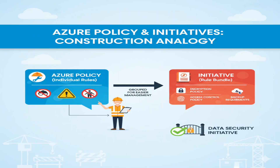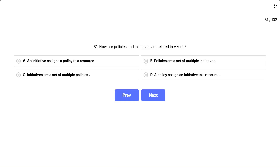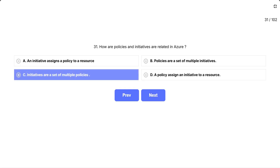Here's a helpful analogy. Think of Azure policy like individual safety rules at a construction site. An initiative would be like a complete safety handbook that contains multiple related rules bundled together. For example, a data security initiative might contain policies for encryption, access controls, and backup requirements, all grouped together for easier management. The correct answer is: initiatives are a set of multiple policies.